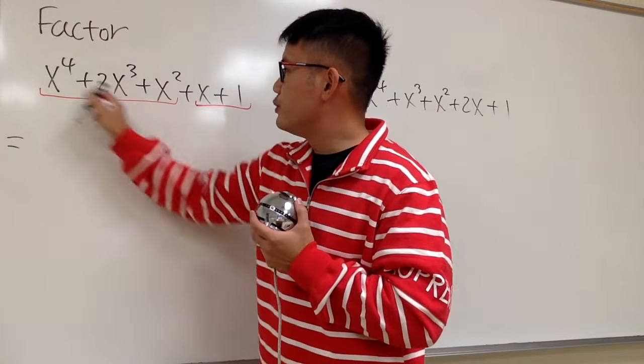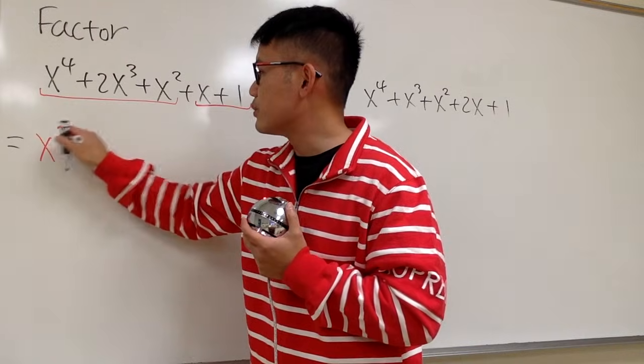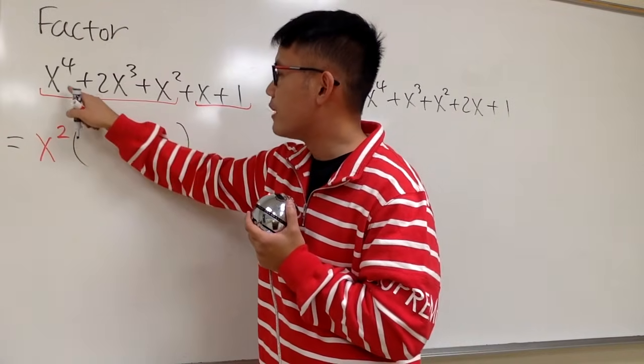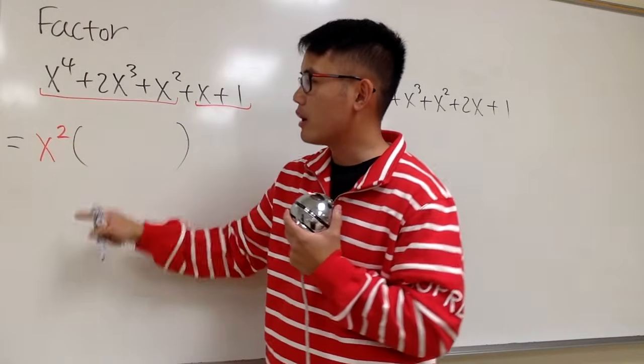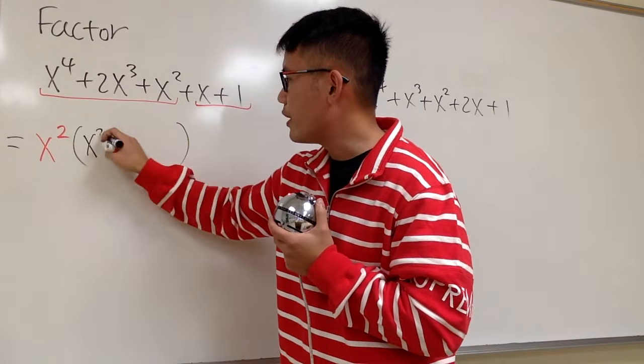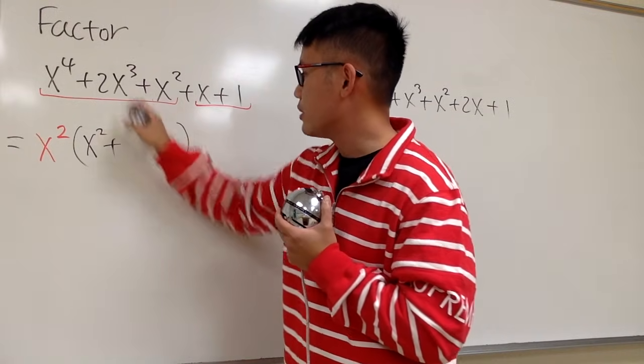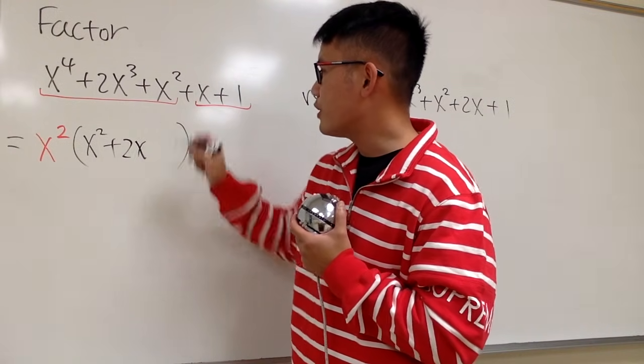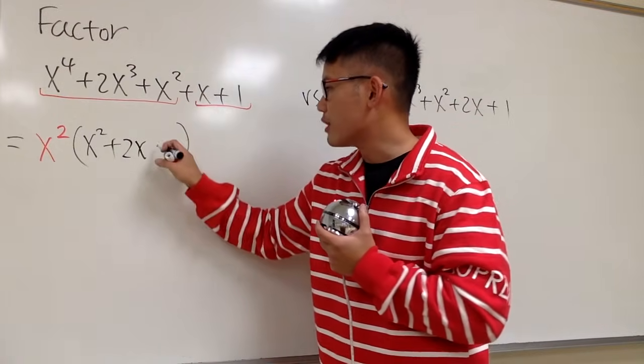For these three terms, we can factor out x to the second power. And then for the leftover, well, for the first term, originally it was x to the fourth, but we took the two out, so we have x squared, and then we add the two. We have x to the third, but we factor out two of them, so x to the first. The x squared was out, so plus 1, just like this.